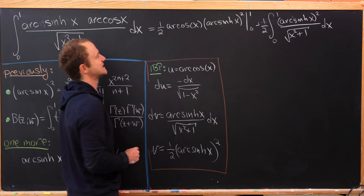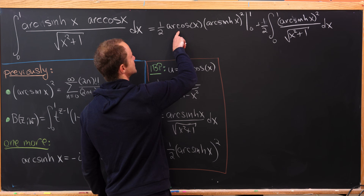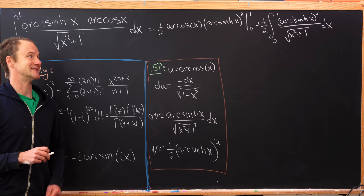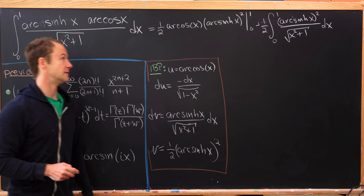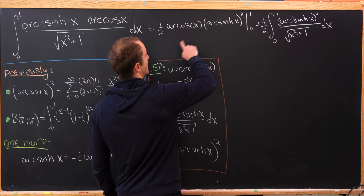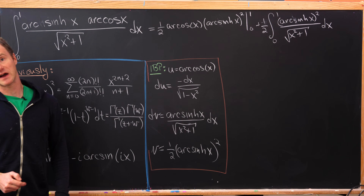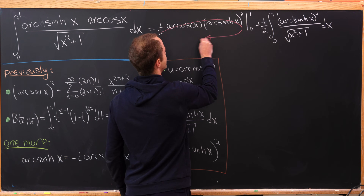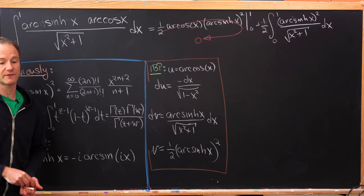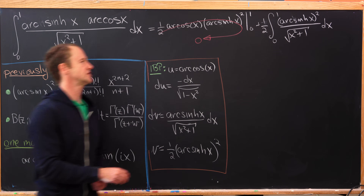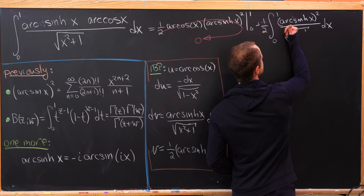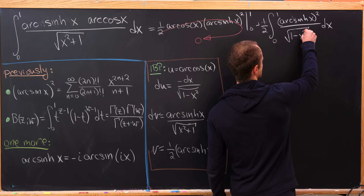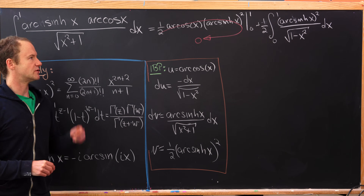Now we evaluate the boundary term. Arc cosine evaluated at 1 gives 0 since cosine(0) = 1, and the inverse hyperbolic sine evaluated at 0 is also 0, so the boundary term vanishes. Also, I realized the denominator should be square root of 1 minus x squared, not x squared plus 1 — that was gobbled up in the integration by parts.